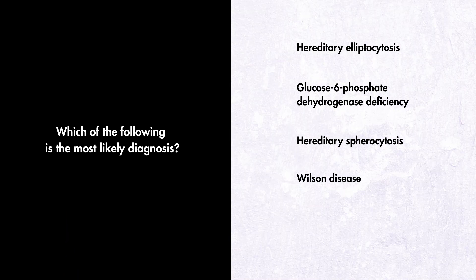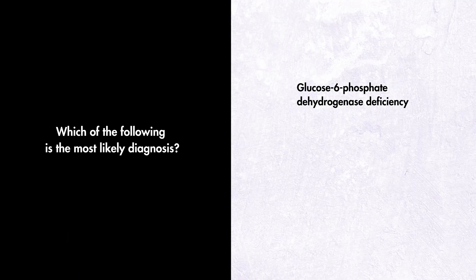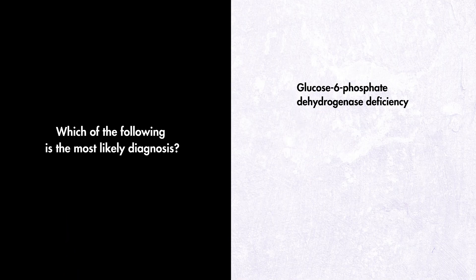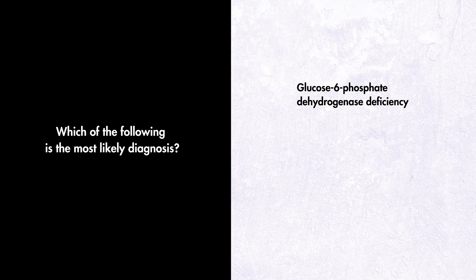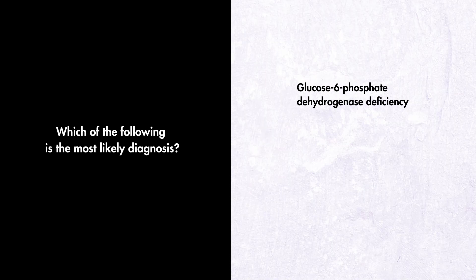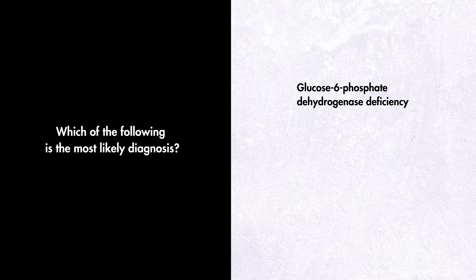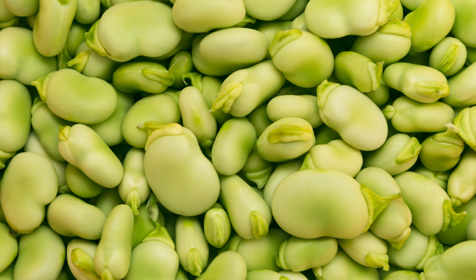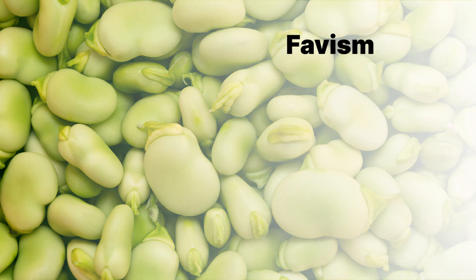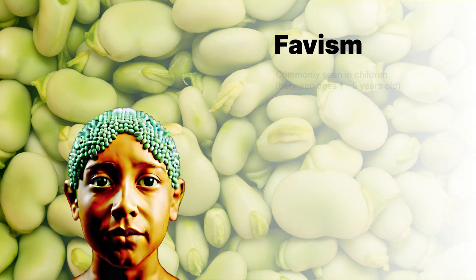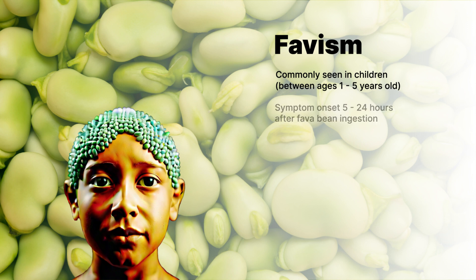The correct answer is glucose-6-phosphate dehydrogenase deficiency. This boy has signs and symptoms and laboratory findings consistent with hemolytic anemia after the ingestion of fava beans. Favism occurs most commonly in children, usually males, between the ages of 1 and 5. The clinical manifestations of acute intravascular hemolysis begin within 5 to 24 hours after fava bean ingestion.